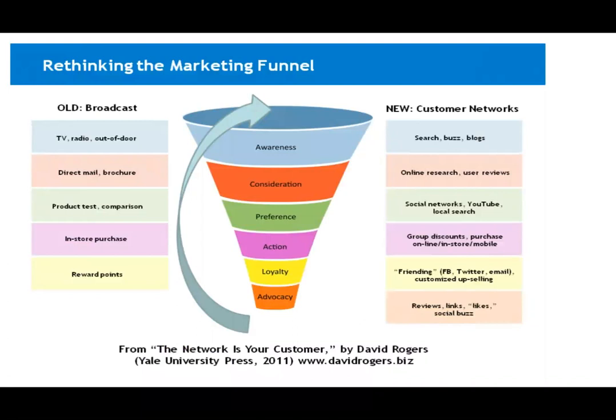That's ultimately what we call a funnel. We talked about the marketing like a pirate model — AARRR. What we're looking at now is a different funnel, very similar. At the broad part at the top it's awareness, then consideration, preference, action, loyalty, and advocacy — meaning somebody is going to go out and recommend you. This is a traditional marketing funnel. On the left side for awareness there's TV, radio, and out-of-door meaning billboards. For consideration, as we get people to think about our product, direct mail and brochures. For preference, some kind of product test or comparison. Action is in-store purchase, and reward points for loyalty.